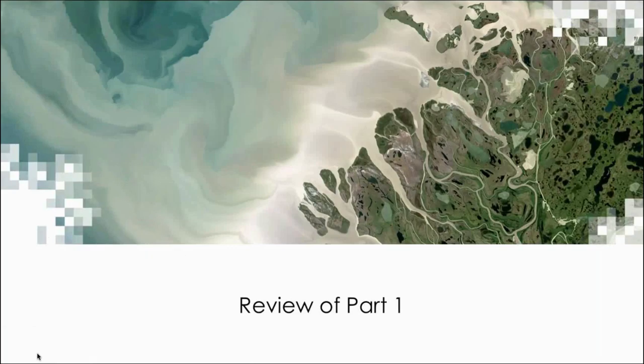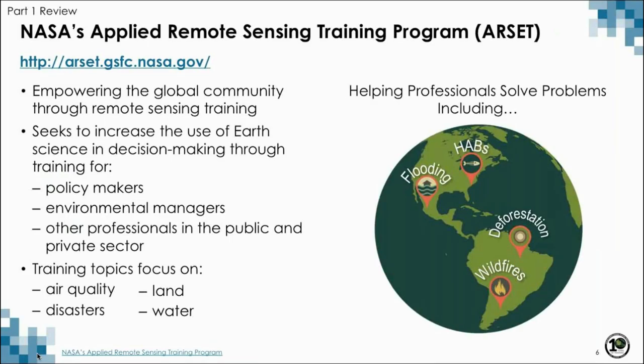First, highlights from Part 1. NASA's Applied Remote Sensing Training Program seeks to increase the use of earth science observations in decision making through training for policy makers, environmental managers, and other professionals in the public and private sector. We work to help professionals solve problems on such topics as harmful algal blooms, flooding, deforestation, and wildfires. ARSET strives to provide the community with relevant trainings and we are always open to new ideas and suggestions.